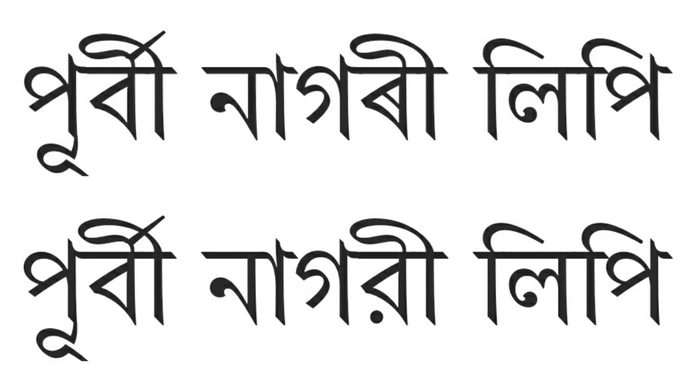The Unicode block for Eastern Nagari script, called Bengali, is U+0980 to U+09FF.